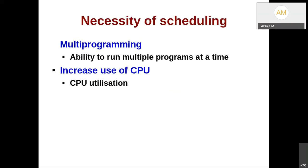We all know why scheduling is needed. If you have a multiprogramming system, you want the ability to run multiple programs at a time, and they need to get scheduled one after another. The benefit of scheduling is that CPU utilization increases. If you did not have multiprogramming, only one program would be running at a time, and the CPU would remain idle for a long part of the time because other processes would not be scheduled when one process is doing some IO.